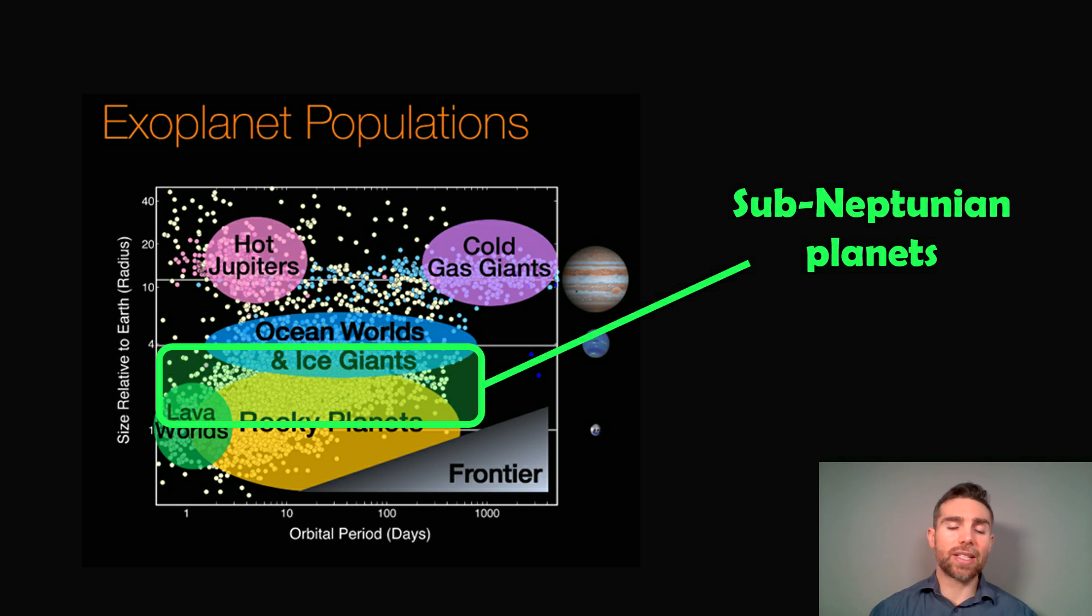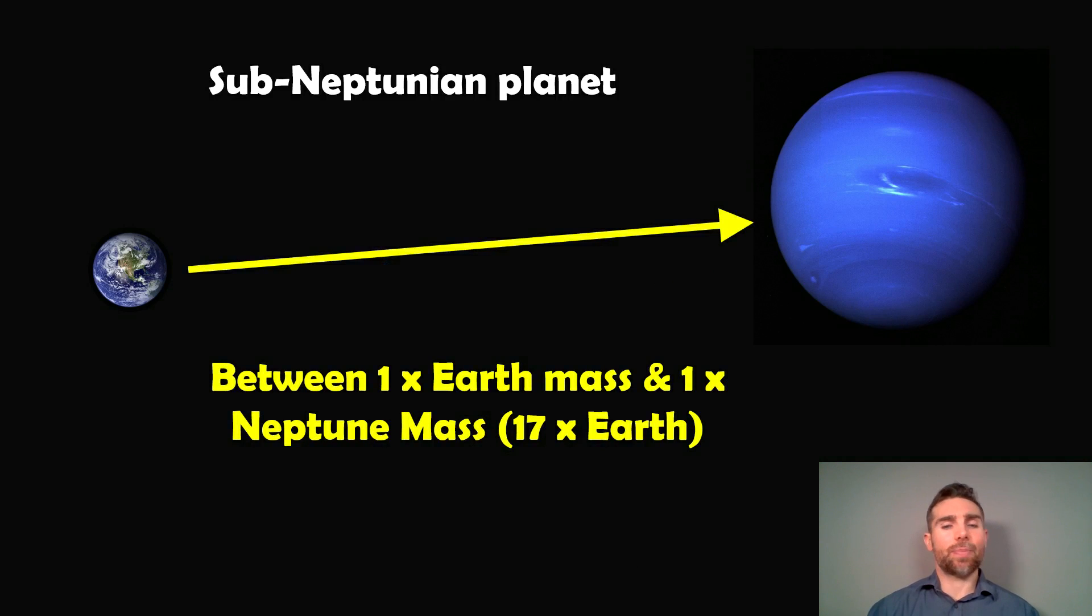Now, sub-Neptunian planets are smaller than Neptunes, but they're also larger than Earth. So they sit in this group here between Earth and Neptune. So a sub-Neptunian planet, mass-wise, they can be between one Earth mass and one Neptune mass. Now, one Neptune mass is around about 17 times that of Earth. So they typically sit in this range, between 1 and 17 times the mass of Earth. That's what would make it a sub-Neptunian planet.